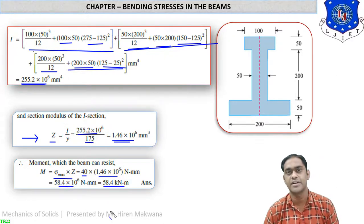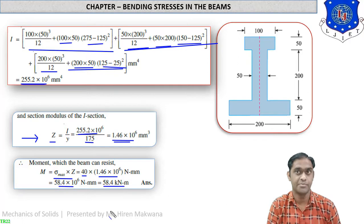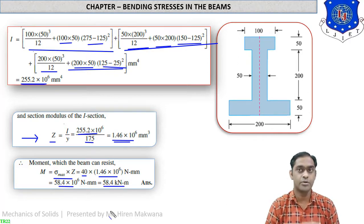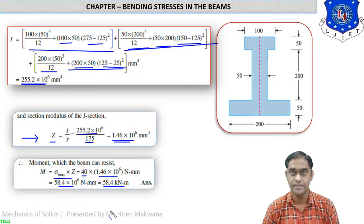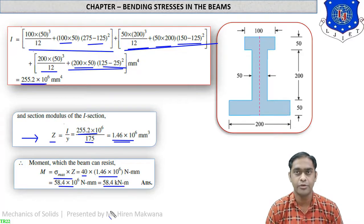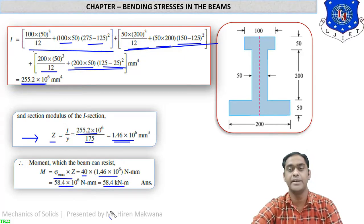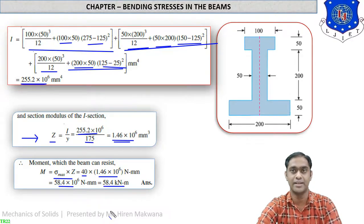So students, this is the method for unsymmetrical sections. In the first example, the T-section is unsymmetrical about the x-axis; in the second, the I-section is also unsymmetrical about the x-axis. Note that both sections are symmetrical about the y-axis, but since the moment is applied about the horizontal neutral axis, we consider symmetry about the horizontal x-axis. These two numericals are quite challenging — practice them, and we will complete this chapter in the next lecture. Thank you very much.